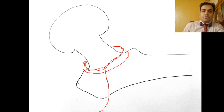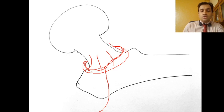The extracapsular arterial ring gives four groups of ascending intracapsular branches: anterior, posterior, medial, and lateral ascending intracapsular arteries.